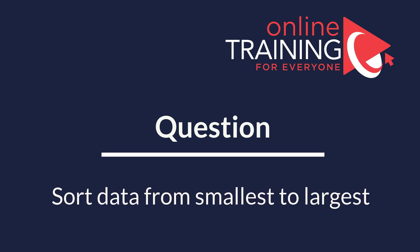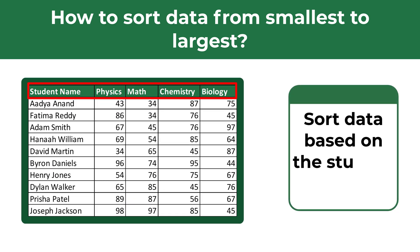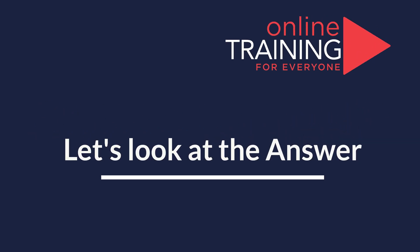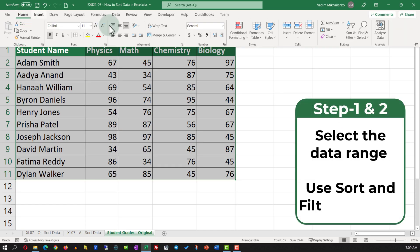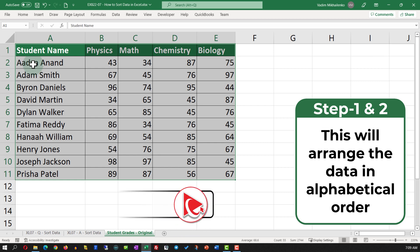A lot of times you might get a question on how to sort data in Excel from smallest to largest. For example, you might be presented with a data set showing student names and their grades in physics, math, chemistry, and biology, and need to sort based on student names. To accomplish this, select the data set, go to the Home tab, navigate to Sort and Filter, and select Sort A to Z — this rearranges the data alphabetically by student name.